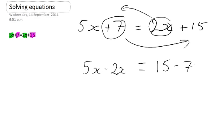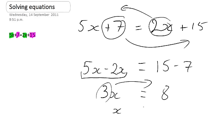Now I can simplify. 5x take away 2x is 3x, and 15 take away 7 is 8. Now the bit I want to move is the 3. At the moment, it's 3 times x. So when I move it over, I'm going to get divide by 3.